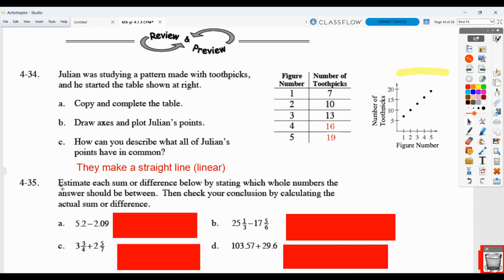For 4.35, you first are going to estimate the sum or difference, and then go ahead and calculate the sum or difference. So for A, we have about 5, and we're subtracting about 2. So our answer would be between 3 and 4. And then you need to show the work for the actual answer. So again, even though they use the word calculating, it means you're going to find the sum or difference. And so we need to show our work. So we're going to make this 5 and 20 hundredths minus 2 and 9 hundredths, show your borrowing, your regrouping, and then get your answer.